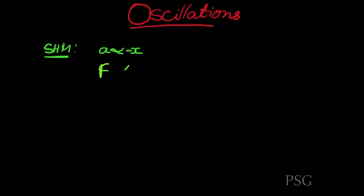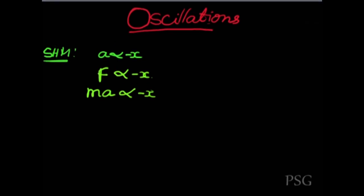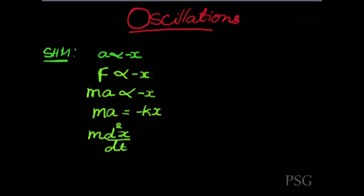In other words, I can write this as: F is directly proportional to displacement. If acceleration is proportional to displacement, it means force is also proportional to displacement. I can write force equal to mass times acceleration, which is proportional to minus displacement. So ma is equal to minus kx.